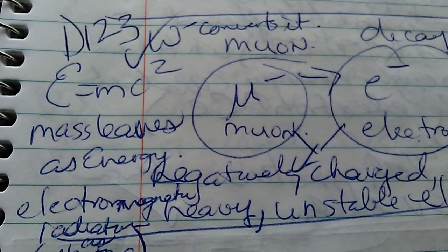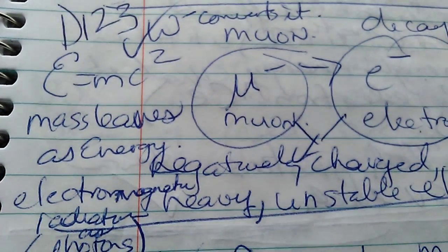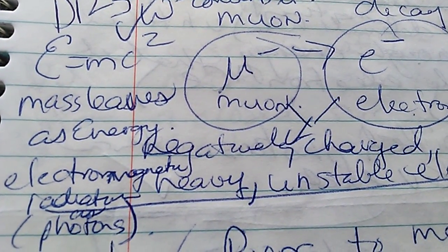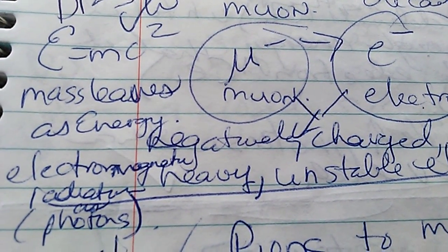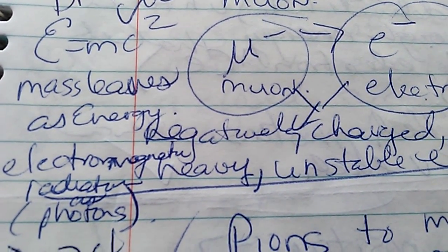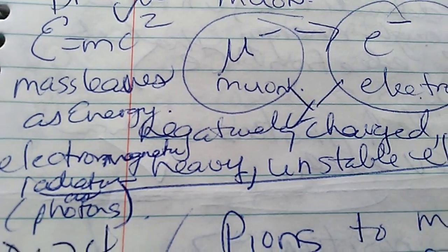It says E equals mc squared. Mass leaves as energy, with electromagnetic addition as radiation as photons.